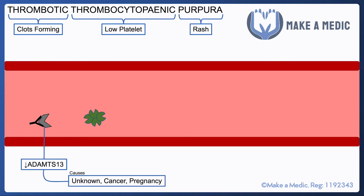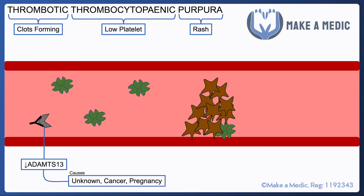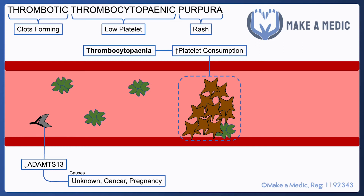There is a reduction in ADAMTS13, which can be due to a number of causes — quite often it's unknown, but it can also be associated with conditions such as cancer and pregnancy. What we end up with is lots and lots of multimers floating around, and eventually one of these will stick onto the endothelium, cause the formation of a platelet plug, and hence result in platelet consumption and thrombocytopenia.